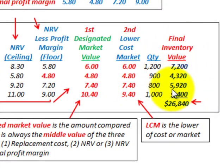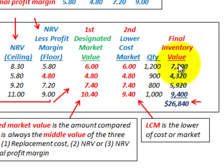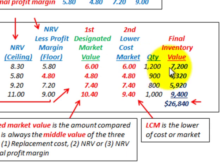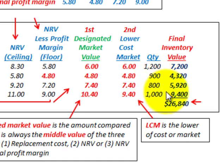To determine our final inventory value, we take the lower of cost or market on a per unit basis and multiply by the quantity held in inventory. For item A, $6.00 times a quantity of 1,200 gives $7,200. We proceed through all items the same way — lower cost or market times quantity — and summing all items together gives us a final inventory value of $26,840.